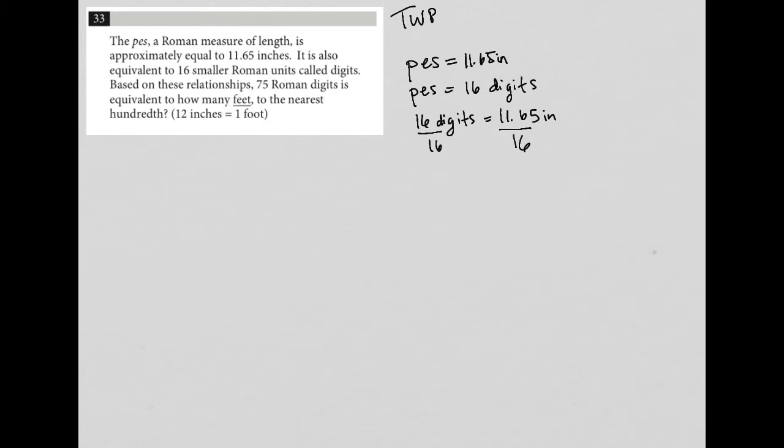So 11.65 divided by 16, and I get that one digit is equal to 0.7, let's call it three, I'll call it two eight. So I'm not rounding too much. 0.728 inches. Okay.